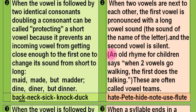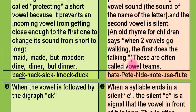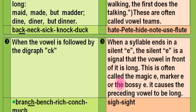There is an old rhyme for children: 'When two vowels go walking, the first one does the talking.' These are often called vowel teams. Examples: 'peed', 'heart', 'note', 'use', 'flute'. When a syllable ends in a silent E, the silent E is a signal that the vowel in front of it is long. This is often called the magic E, marker E, silent E, or the bossy E. It causes the preceding vowel to be long.